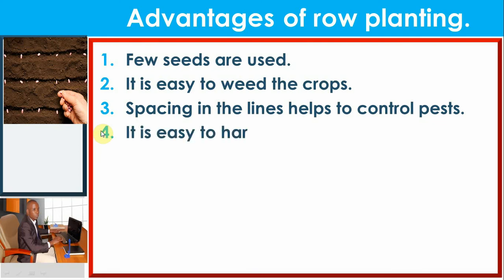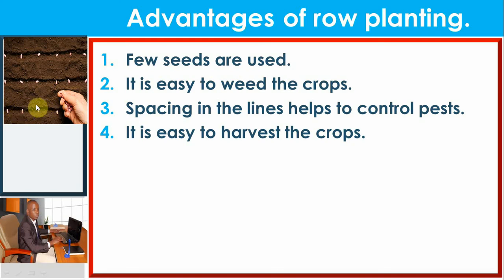Another advantage is that it is easy to harvest the crops. It becomes very easy to come and start harvesting when they are ready in the garden. Because there is spacing, you can easily go through — for example, with beans, you just uproot one plant after another when they are ready and take them home. These are some of the advantages of row planting.